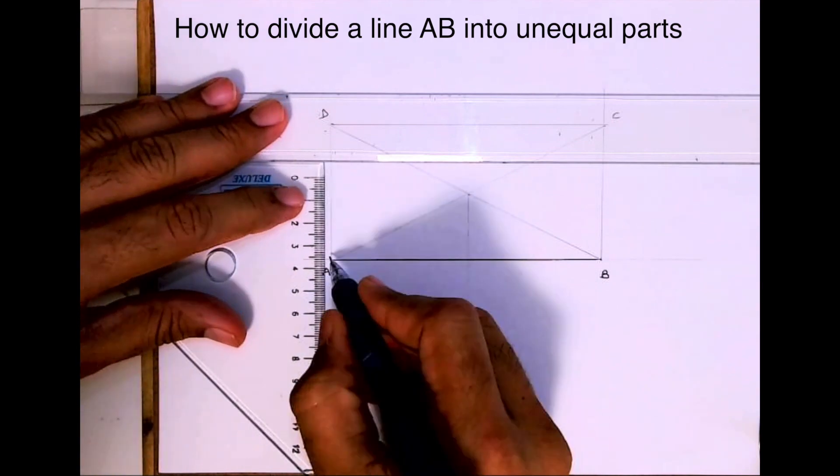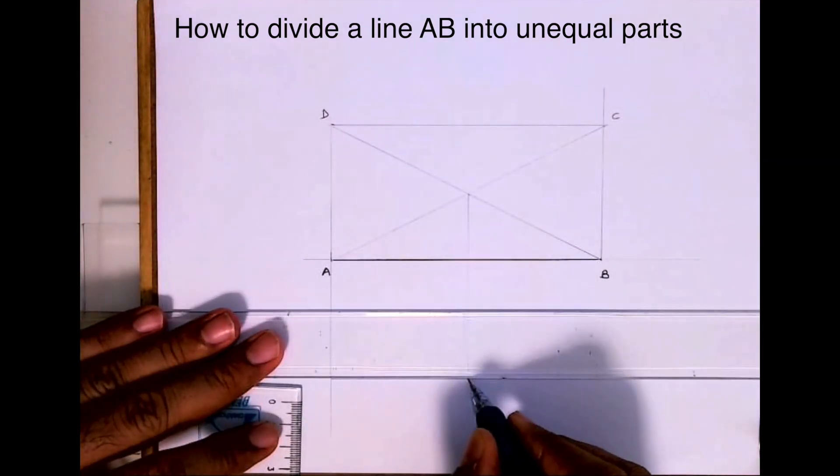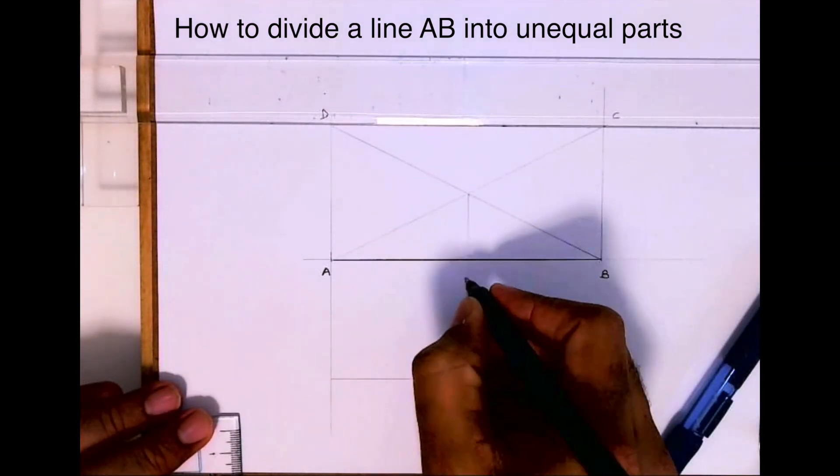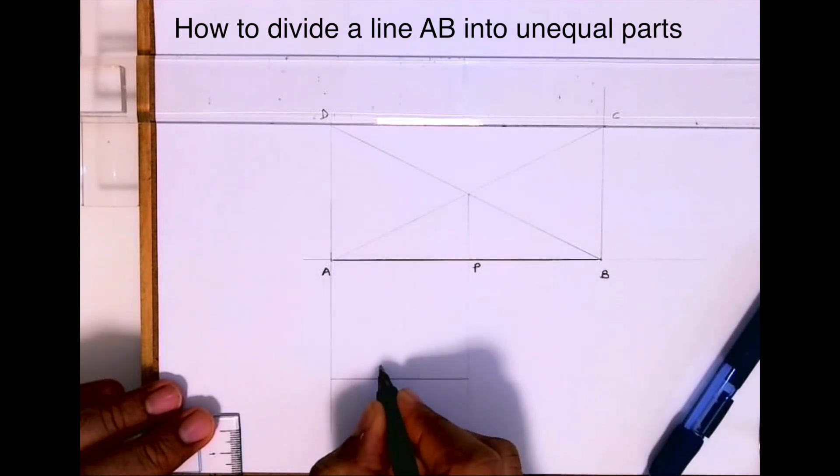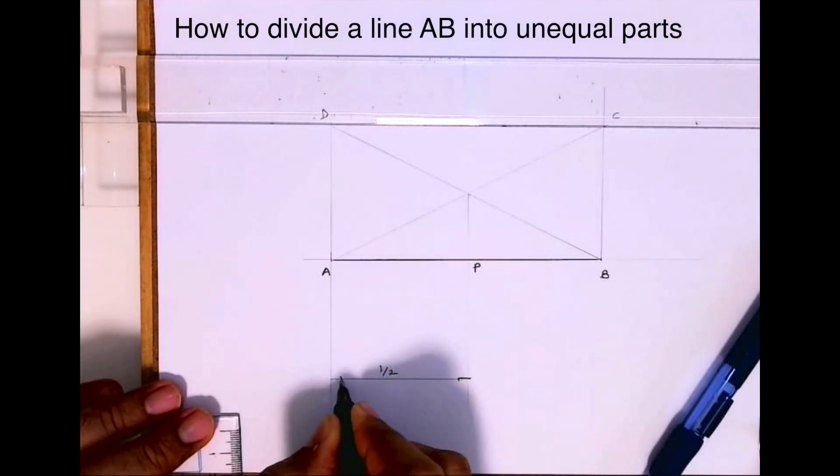After that you draw a vertical line. See, this will be half of AB. This is AP, so AP is half of AB.